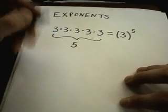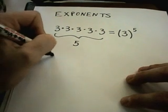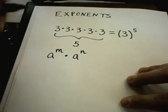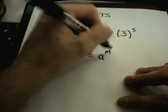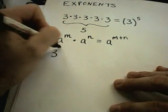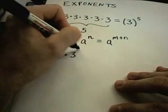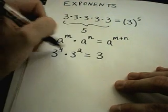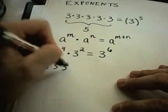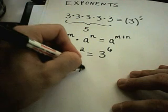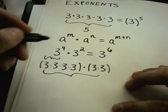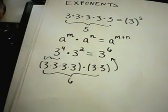This gives us our first basic rule: if you have a number a raised to a power m, multiplied by a raised to the power n, you simplify by adding the exponents. For example, three to the fourth times three to the second simplifies to three to the sixth. This makes sense because three to the fourth is three times three times three times three, and three squared is three times three — count them up and you have six threes being multiplied.